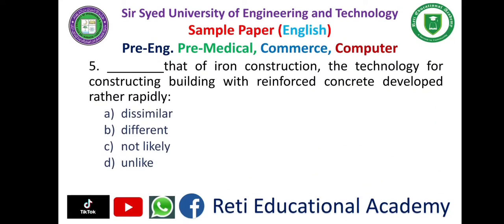Question number five: 'Dash that of iron constructions, the technology for constructing buildings with reinforced concrete developed rather rapidly.' Options: A) dissimilar, B) different, C) not likely, D) unlike. The correct answer is D, 'unlike.'